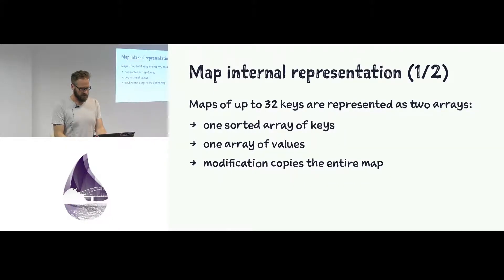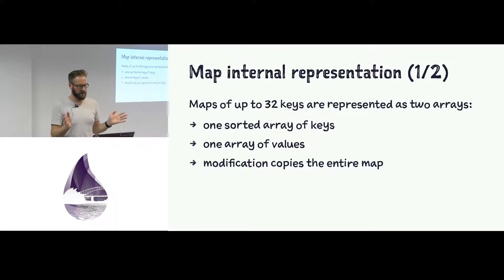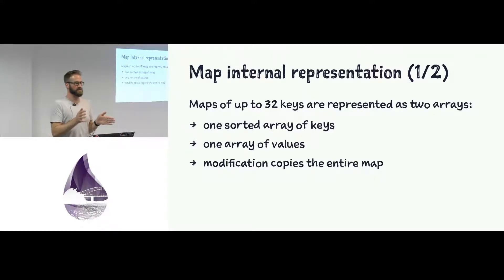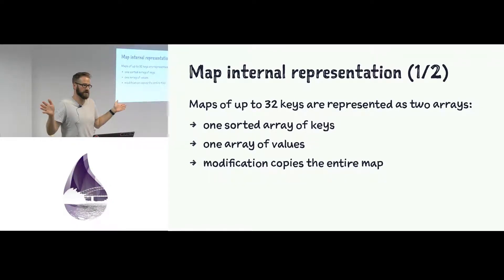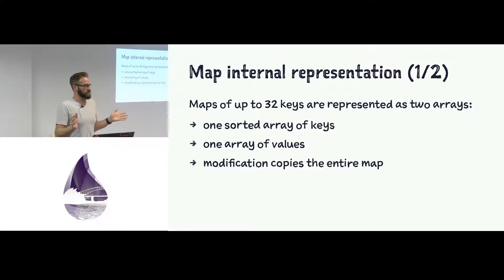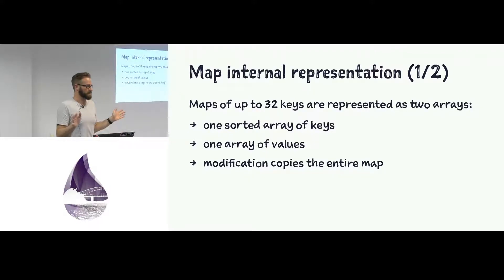How do maps work? Maps in BEAM, for anything 32 keys or less, are basically just an array, and BEAM will scan through the array to find the keys you want. For 32 items, it happens to be a size where it's cheaper than computing a hash and doing a hash lookup. After 32 keys, it becomes a different data structure under the hood, but Elixir hides that and gives you the same interface.